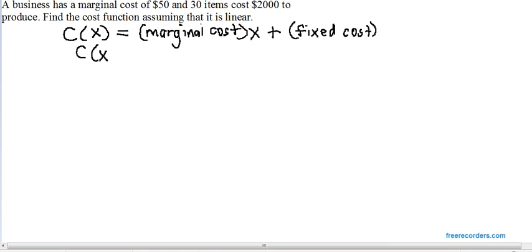Next, in this problem, they tell us the marginal cost, or the slope, is $50.